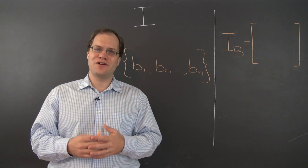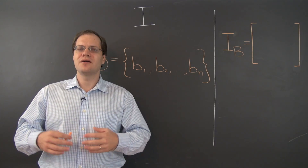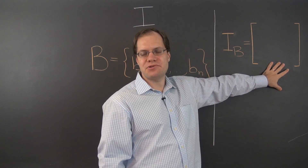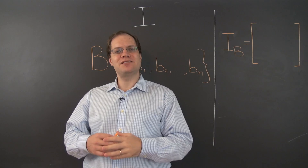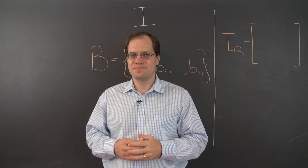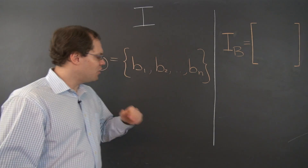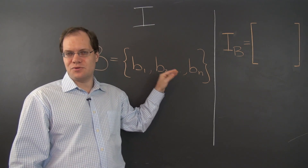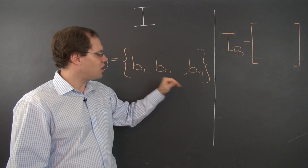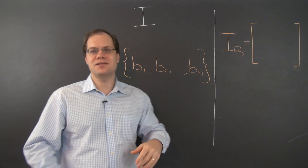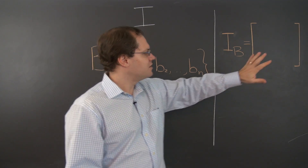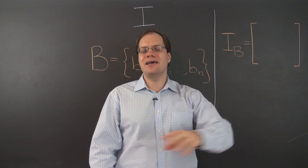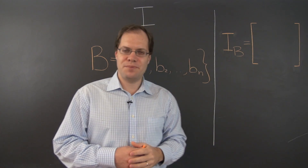Let's have another super general discussion and talk about the identity transformation and its component space representation without specifying what the vector space is. In this case we also won't specify any special properties of the basis — we'll consider a completely arbitrary basis, because the matrix representation of the identity transformation is the same regardless of our choice of basis.